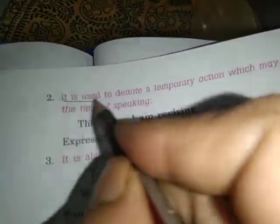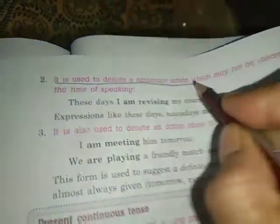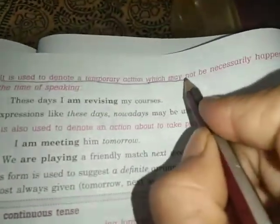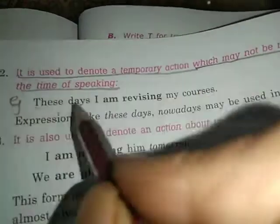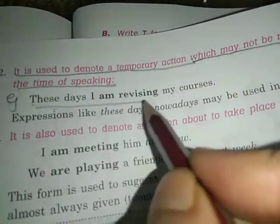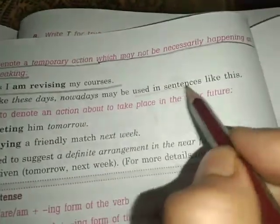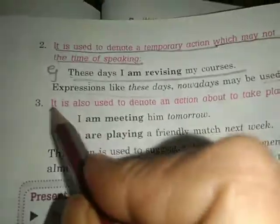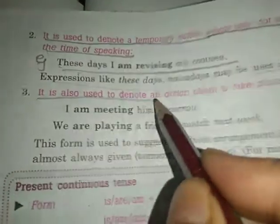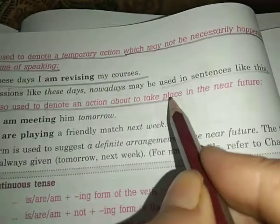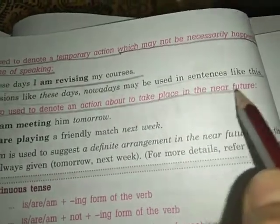Second point: it is used to denote a temporary action which may not necessarily be happening at the time of speaking. Example: these days I am revising my courses. Expressions like 'these days' or 'nowadays' may be in such sentences. It is also used to denote an action about to take place in the near future.